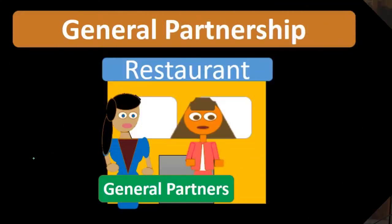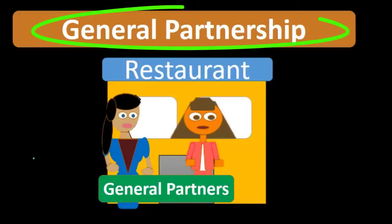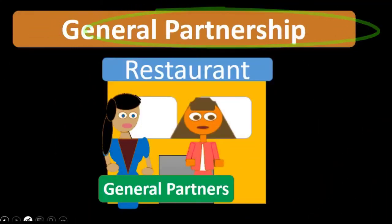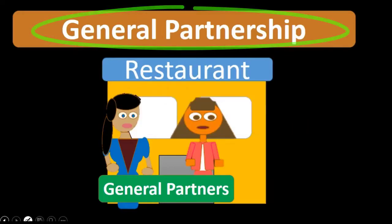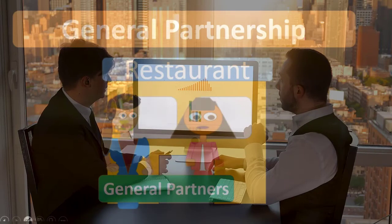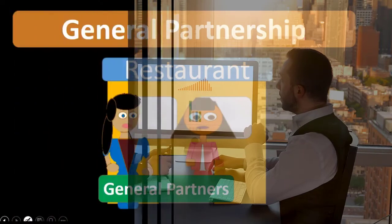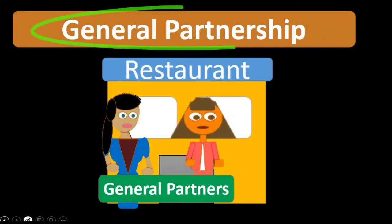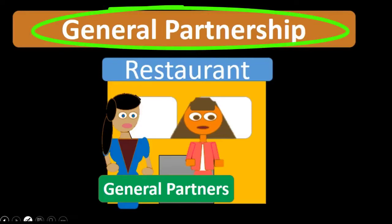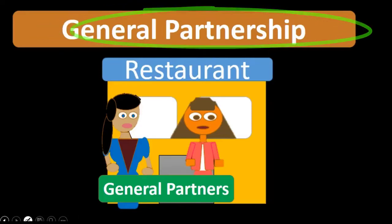If two or more individuals go into business together and start earning revenue, then they are a general partnership. Like the sole proprietor, the general partnership is easy to form — we have two people or more getting into business and starting to do business together, and we typically have a general partnership in that case.